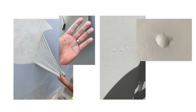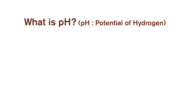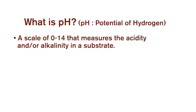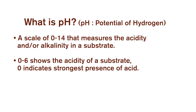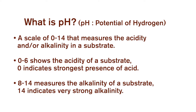One of the main causes of exterior paint failures is pH burn. What is pH? pH is a scale of 0 to 14 that measures the acidity and/or the alkalinity of a substrate. Readings of 0 to 6 show the acidity of a substrate, with 0 being the strongest presence of acid. Readings from 8 to 14 measure the alkalinity, with 14 being very strong alkalinity. 7 would be neutral.